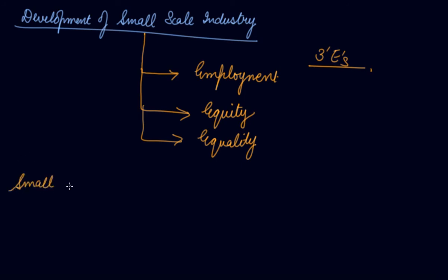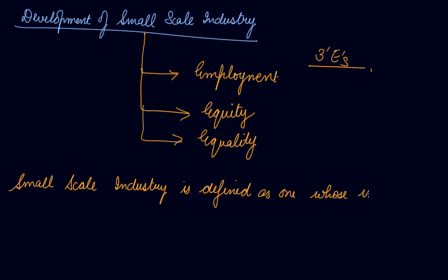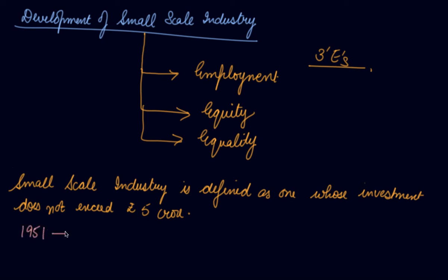The definition of small-scale industry: a small-scale industry is defined as one whose investment does not exceed rupees five lakh. This is the current definition. When the Industrial Resolution came in 1951, focusing on industrial growth, the small-scale industry was also defined similarly.